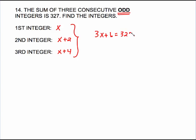Simple equation to solve. Subtract 6 from both sides, and we have 3x equals 321. Divide both sides by 3, and x is 107. But again, that's just my x, I've got to plug back in here, 107. Add 2 to that brings me to 109. The next consecutive odd from there is 111. And if you add those up, you will get 327.